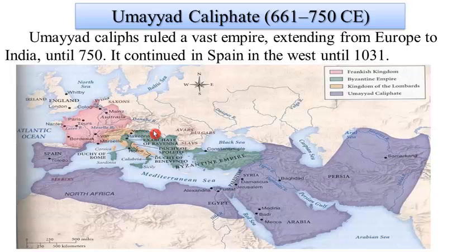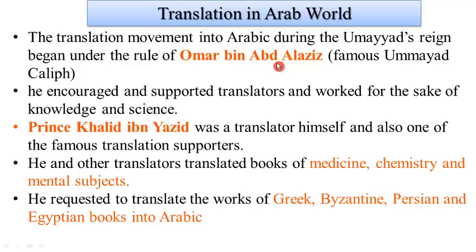The Umayyad caliphs governed a large area extending to Spain and also developed civilization where translation flourished. Umar ibn Abdulaziz encouraged translators. Similarly, Prince Khalid ibn Yazid encouraged translators and the translation of books of medicine, chemistry, and related subjects from Greek, Byzantine, Persian, and Egyptian sources into Arabic.